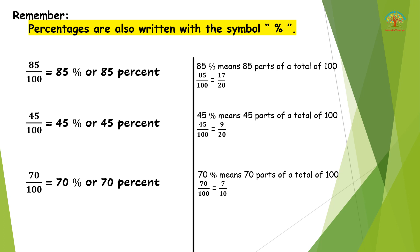When you see 85/100, 45/100, 70/100 and so on, you can further reduce these fractions. 85/100 reduces to 17/20; 45/100 reduces to 9/20; and 70/100 reduces to 7/10. These are the reduced fractions of the marks out of 100.